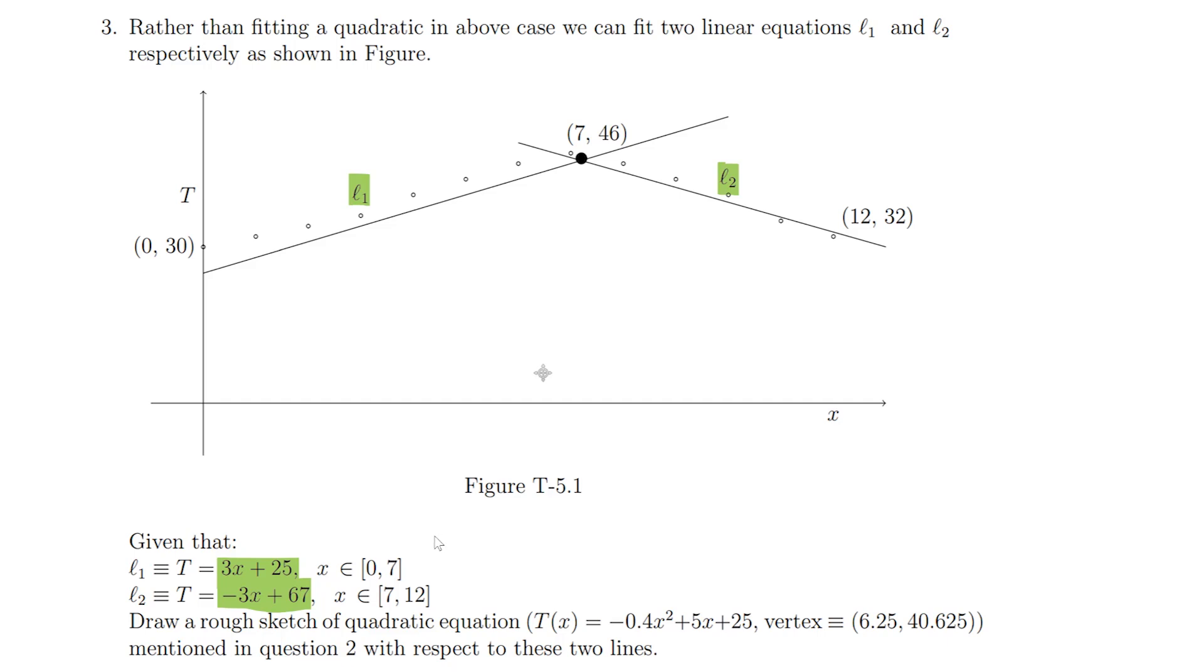The question is asking us to draw a rough sketch of the quadratic equation that was fit, and the vertex is also provided for us with respect to these two lines. I think it is useful if we can just mark out the points here.